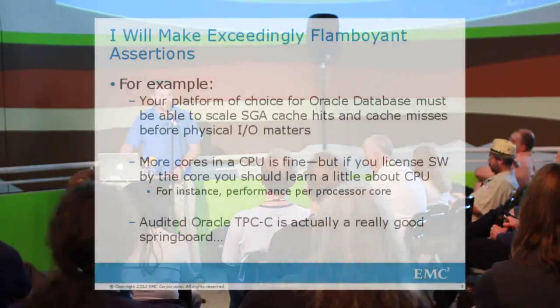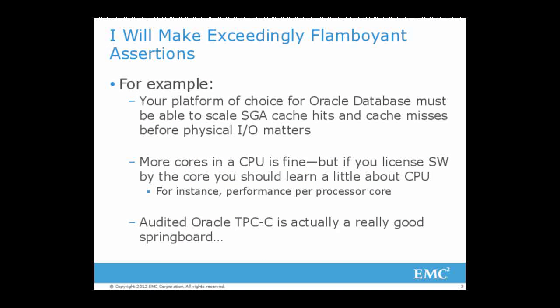I will make exceedingly flamboyant assertions. For example, if your platform of choice for Oracle database — if you have the opportunity to help aid IT purchasing decisions — you have to know whether or not the SGA on your platform can scale cache misses and hits before you even start thinking about physical I/O. Everybody always thinks physical I/O is a hard problem to solve. It's not — it's very easy to get a lot of physical I/O now. This is not Y2K. Sure, pack all kinds of cores in these CPUs — some is good, apparently more must be better. But we license software by the core, so it behooves all of us to know a little bit about CPUs.